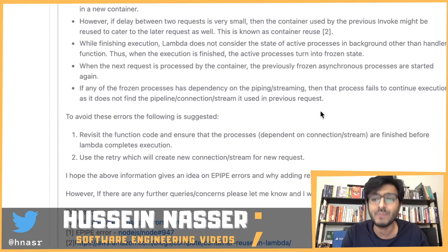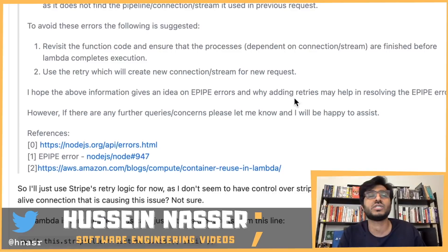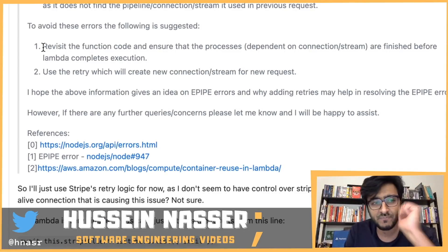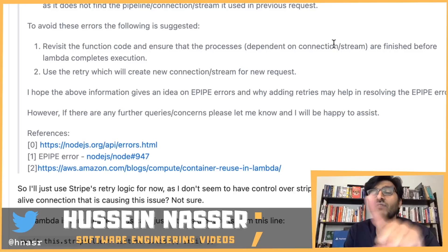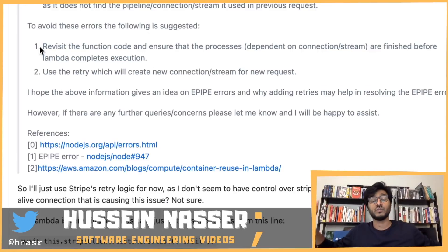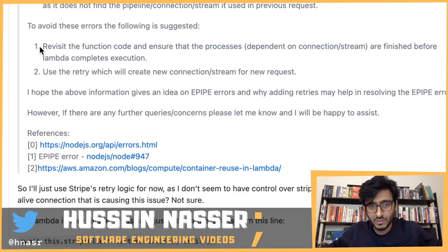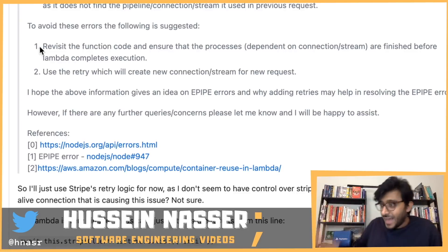So what did Amazon suggest to avoid these errors? The suggestion is: revisit the function code and ensure that processes dependent on the connection stream are finished before the Lambda handler function finishes. 100% — this is the right way, in my opinion. Absolutely, one thousand percent, this is the right solution.